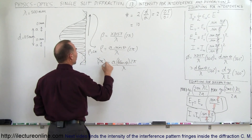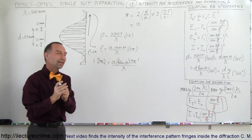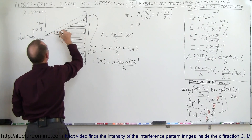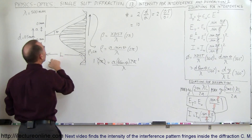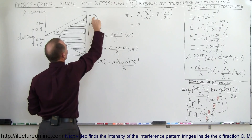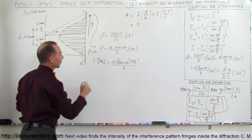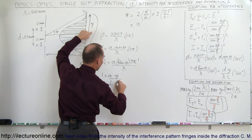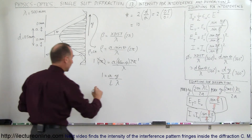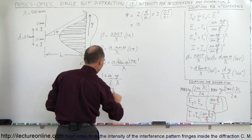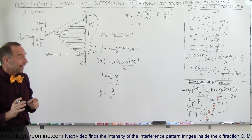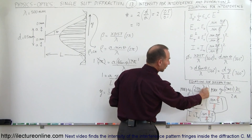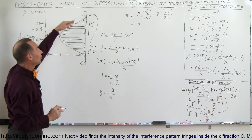Right away we can see that we have 2π on both sides, so those cancel to 1. Instead of writing the tangent of theta we can write the opposite over adjacent — the distance to the screen is L, and the distance along the screen is y, so tangent of theta equals y over L. We can write 1 equals a times y over L divided by lambda, and solving for y we get y equals L times lambda divided by a. For the first minimum with m equals 1, the 2s cancel, confirming y equals lambda L over a.